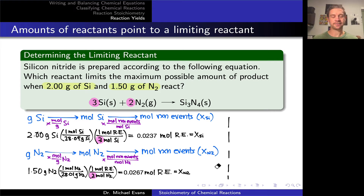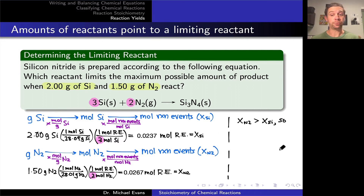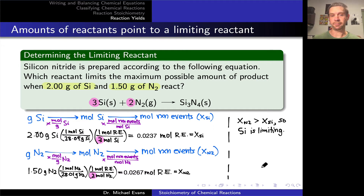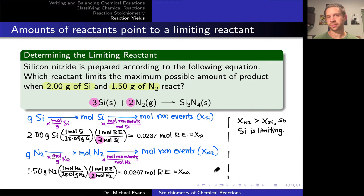To determine the limiting reactant, we look for the smaller of the two numbers — analogous to the pancake example where we looked for the smallest number of pancakes each ingredient could make. Comparing X_Si to X_N2, we find that X_N2 (0.0267) is larger than X_Si (0.0237). This means silicon is the limiting reactant: we can only do 0.0237 moles of reaction events, and there will be leftover N2 after all the silicon is consumed.